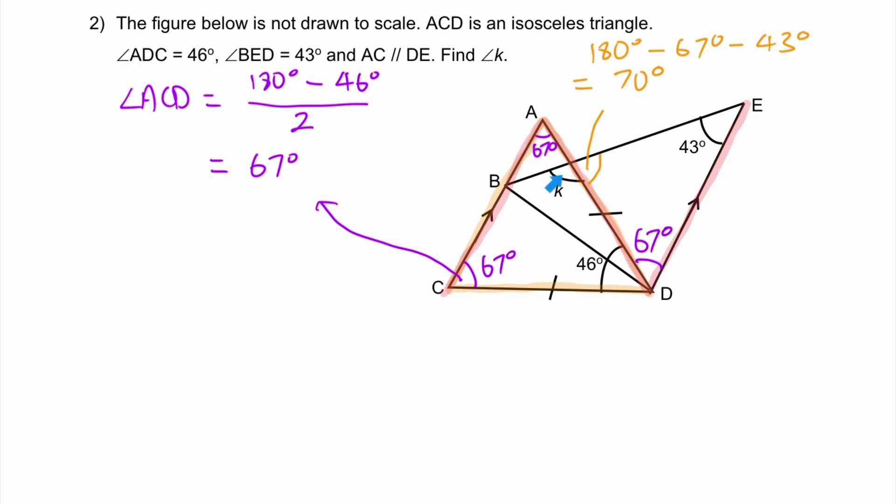Last, to find angle K, we just need to use angles on a straight line. Angle K, we just take 180 degrees minus 70 degrees, and that will give us the answer of 110 degrees.